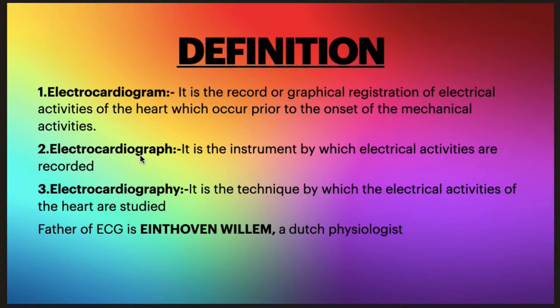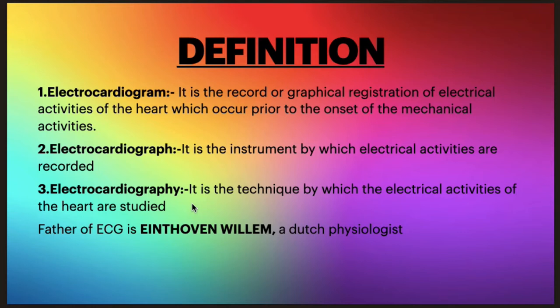We often get confused with three terms: electrocardiogram, electrocardiograph, and electrocardiography. The electrocardiogram is the record or graphical representation. The electrocardiograph — even though it has 'graph' as a suffix — is the instrument by which the electrical activities are recorded. Electrocardiography, with the suffix 'graphy,' is the technique by which we measure or study the electrical activities of the heart. We call Einthoven William the father of ECG; he was a Dutch physiologist.